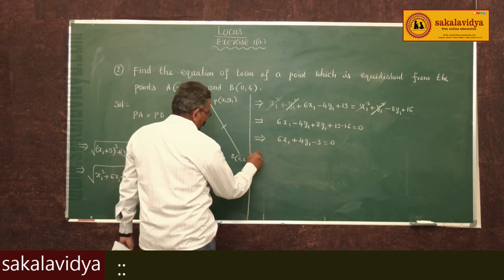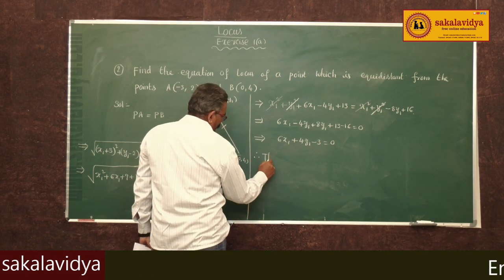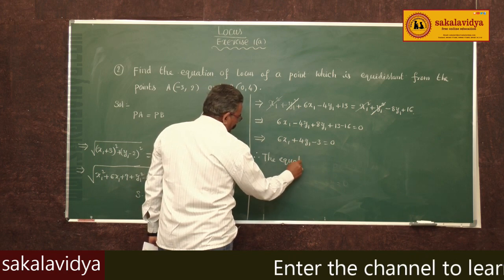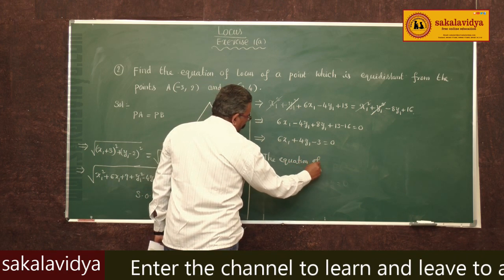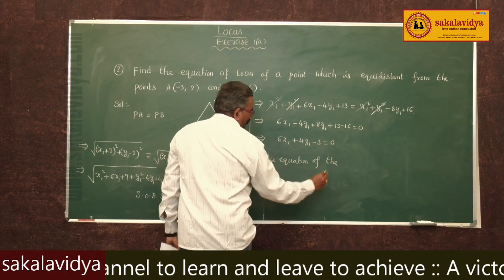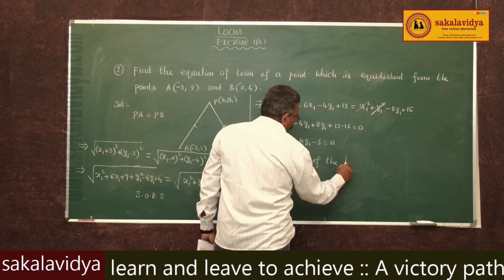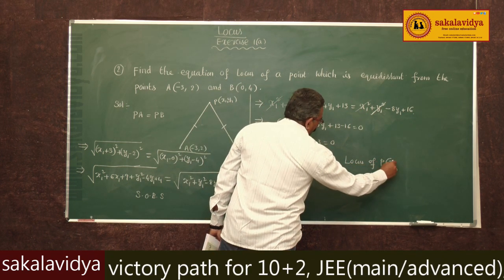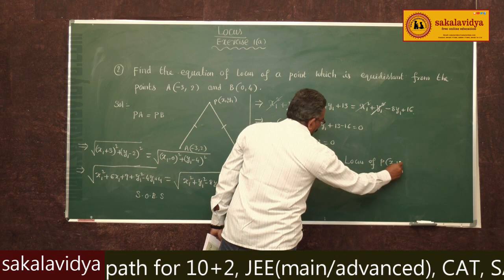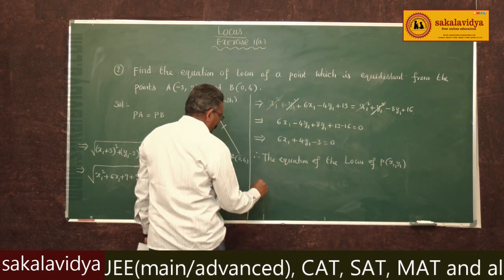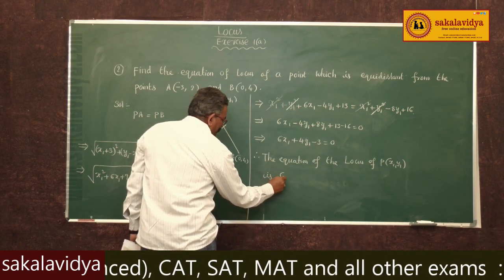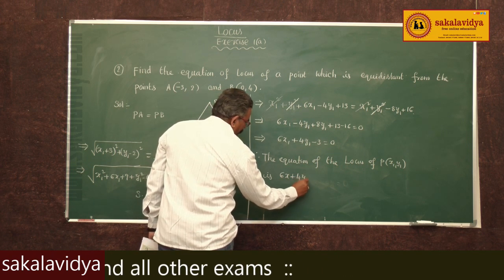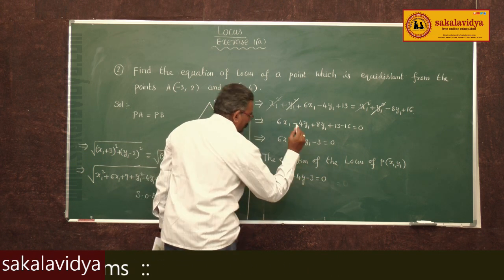Therefore, the equation of the locus of P(x1, y1) is: 6x plus 4y minus 3 equals 0.